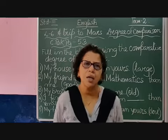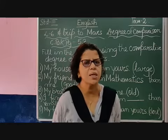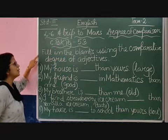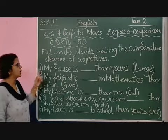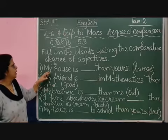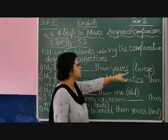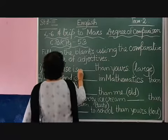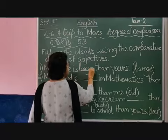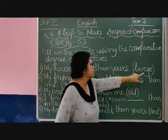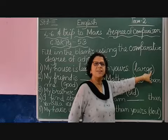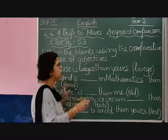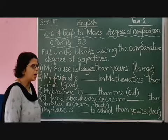Now coming to the exercise in your course book, page number 53. You have to fill in the blanks using only the comparative degree of adjective — that means we are only comparing between two. Number 1: 'My house is ___ than yours' and the word given is 'large.' So what will come here? It is 'larger' — we add ER. Be careful: E is already given at the end of 'large,' so we will not write another E. We just put R. Large becomes larger.